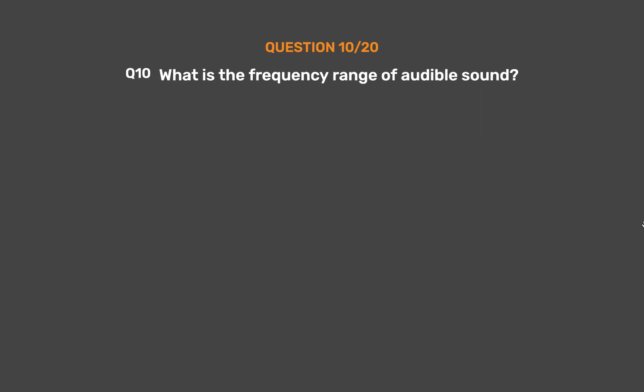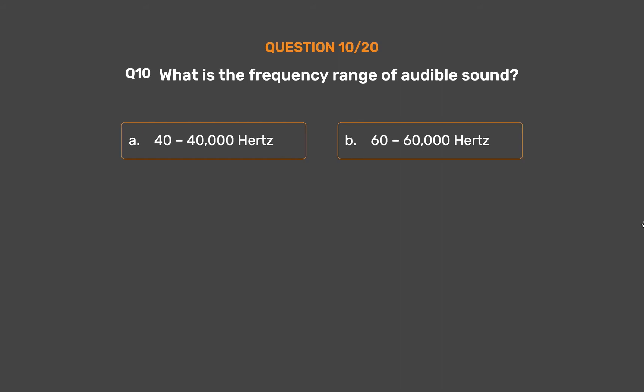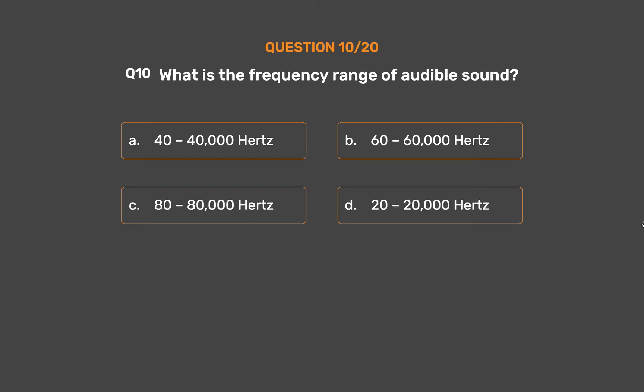Question number 10. What is the frequency range of audible sound? Option A, 40 to 40,000 hertz; Option B, 60 to 60,000 hertz; Option C, 80 to 80,000 hertz; Option D, 20 to 20,000 hertz.